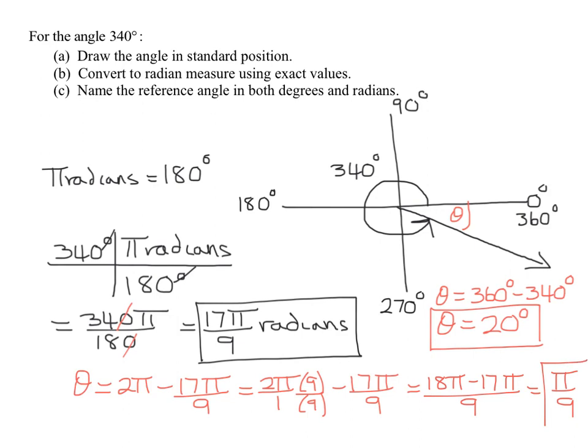So our reference angle in radians is pi over 9. And in degrees, it's 20 degrees. Of course, what's the other way of finding the reference angle in radians? It is to convert 20 degrees into radians using this method.